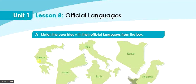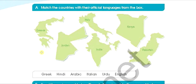Let's see our first question: Match the countries with their official languages from the box. Here are the countries and here are the languages. We've got Greece, Jordan, Italy, India, Kenya, and Pakistan. Greece بالعربي هي اليونان.